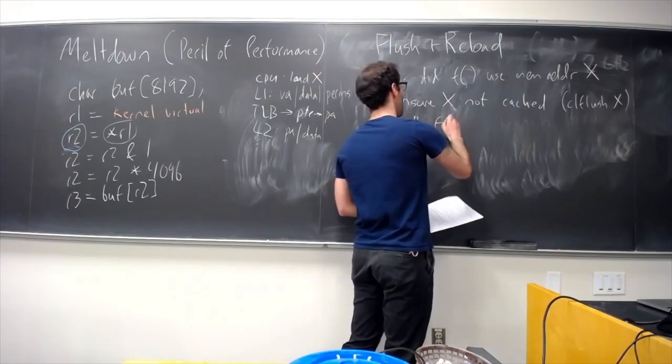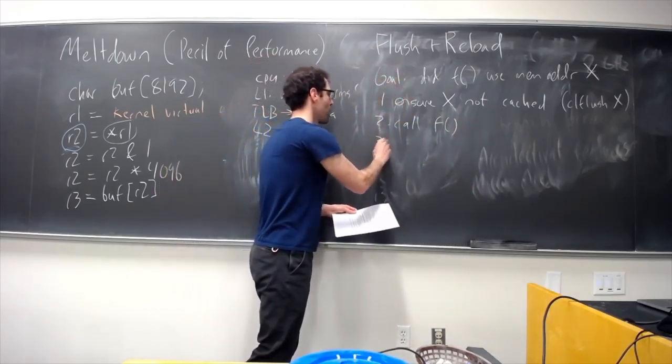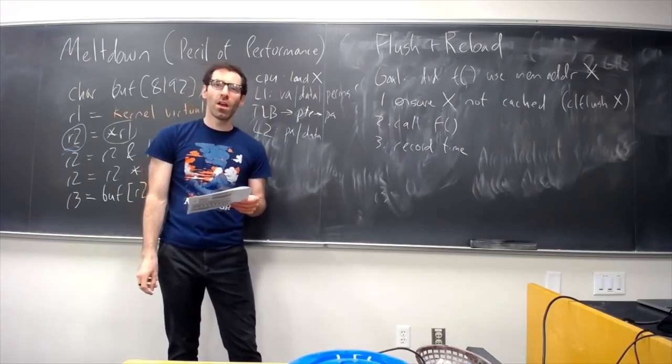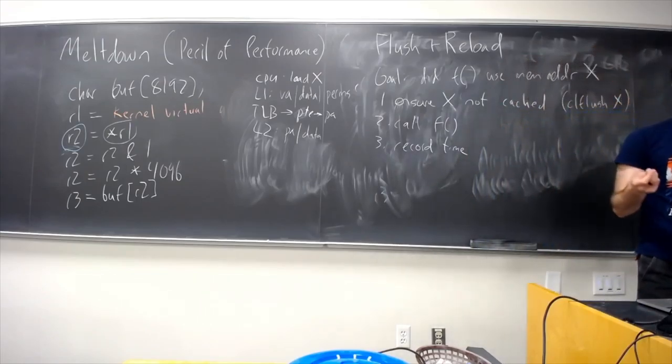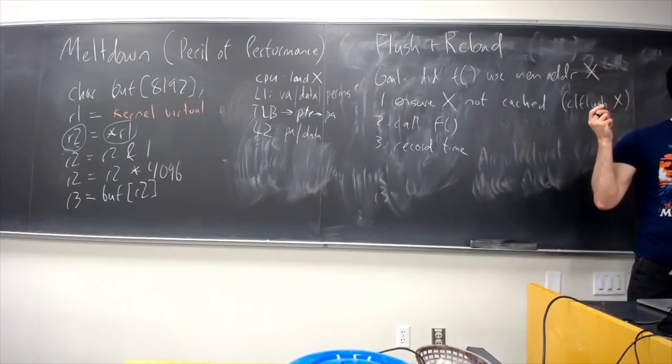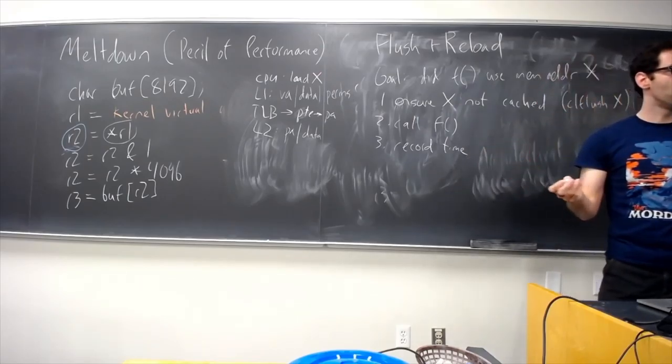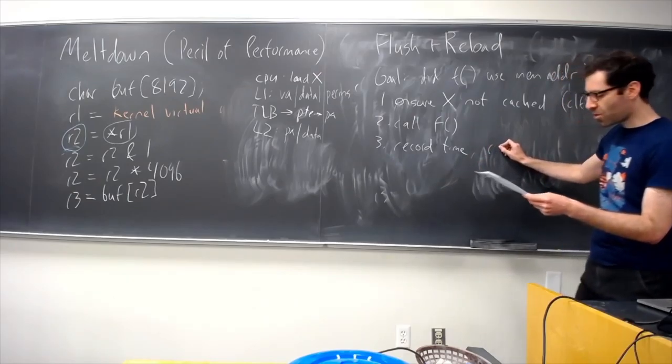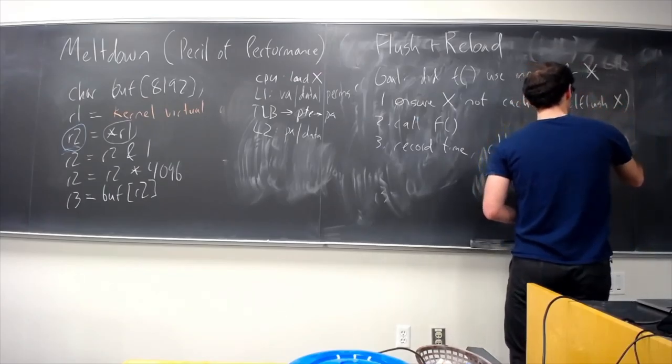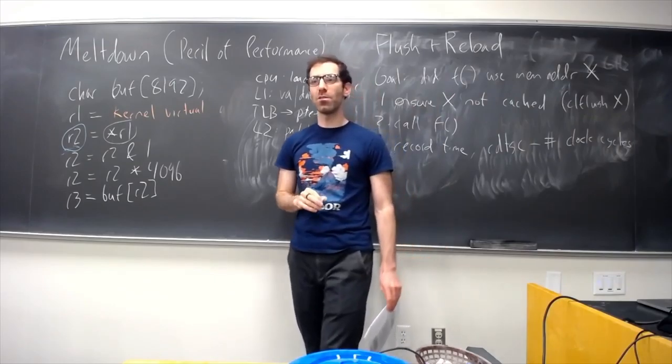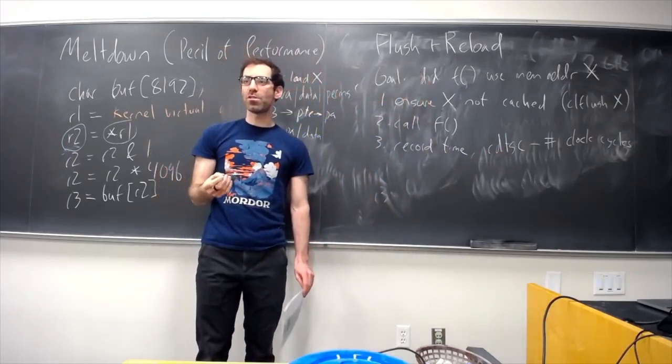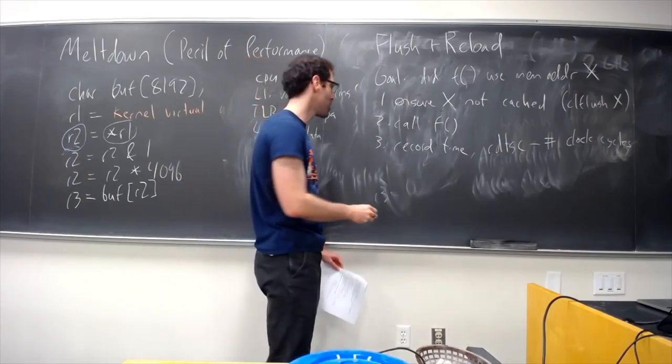Then, we need to call our function. And then we need to record the time. Now, we're dealing with sub-nanoseconds times here. In fact, CPUs are executing at 2 gigahertz, something like that. So, it might be challenging to accurately measure time at that level. Fortunately, again, Intel CPUs come to the rescue with a instruction RDTSC, which will tell us exactly how many clock cycles there have been.